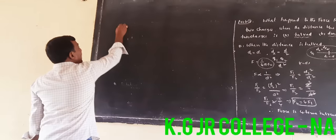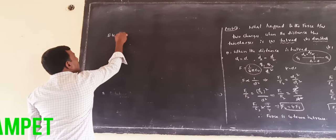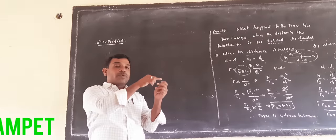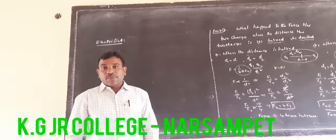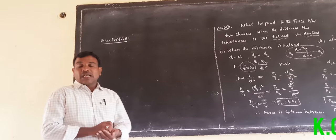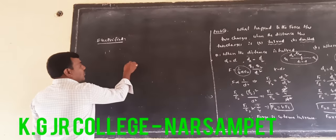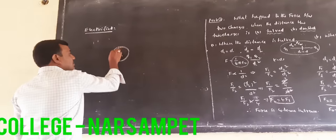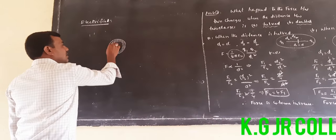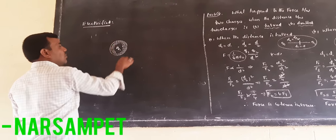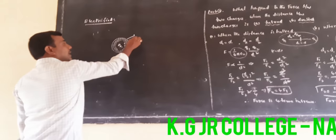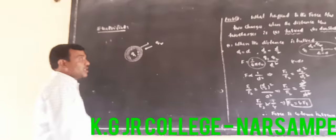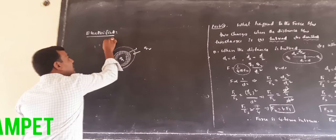Now, the next topic is electric field. Having discussed charge, types of charge, and properties of charge, we now discuss what is electric field. A charge creates a region around it. In that region, any other charge placed will be attracted or repelled. That region or space around the charge which attracts or repels another charge is called electric field. Electric field is a vector quantity.